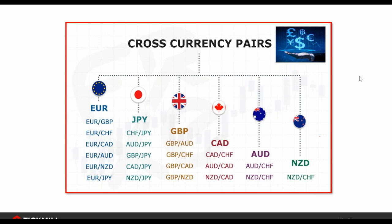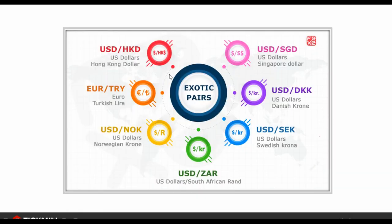We also have exotic pairs — pairs that are not heavily traded, so their spreads are larger. These include USD/HKD, EUR/TRY, USD/NOK, USD/ZAR, USD/SEK, USD/DKK, and USD/SGD. Since most of us are beginners, I would advise focusing first on the major currency pairs, or even just one or two pairs. You need to observe first how this market moves.